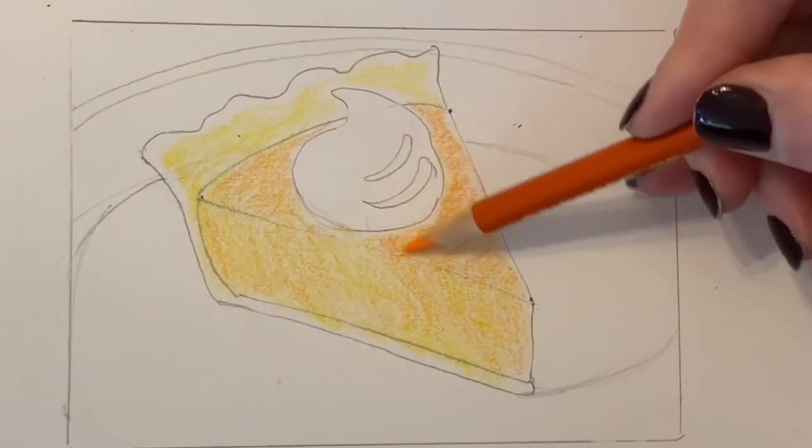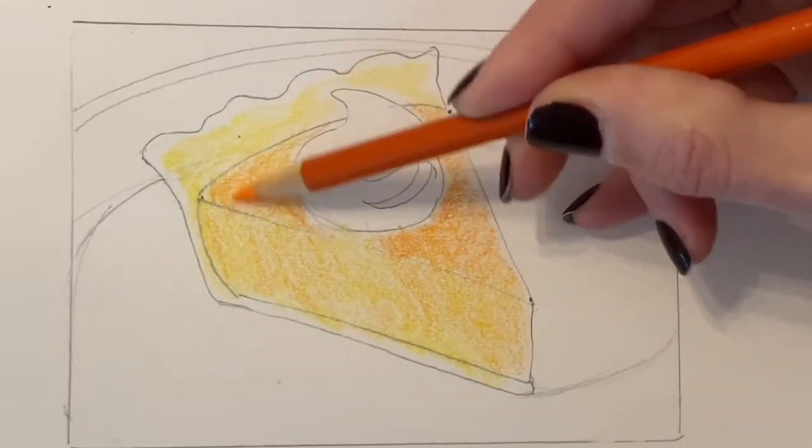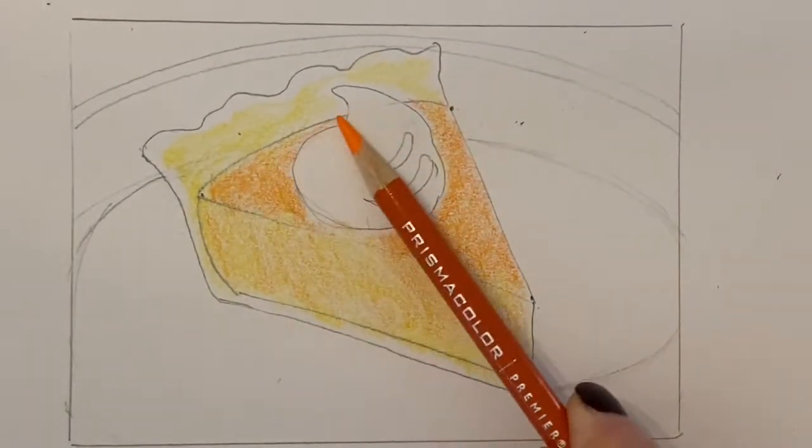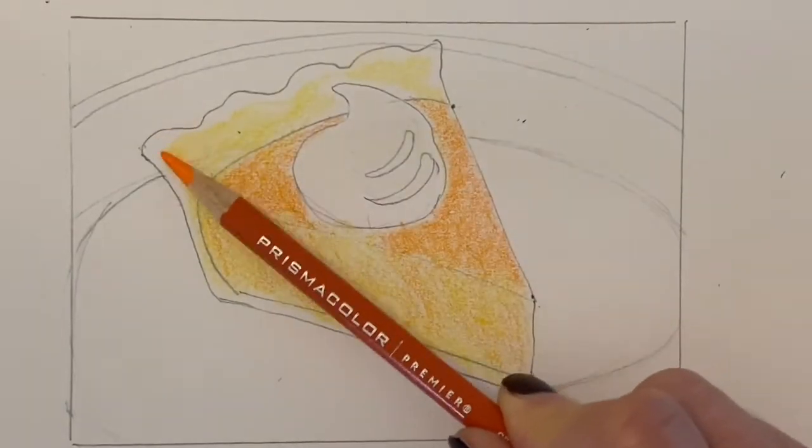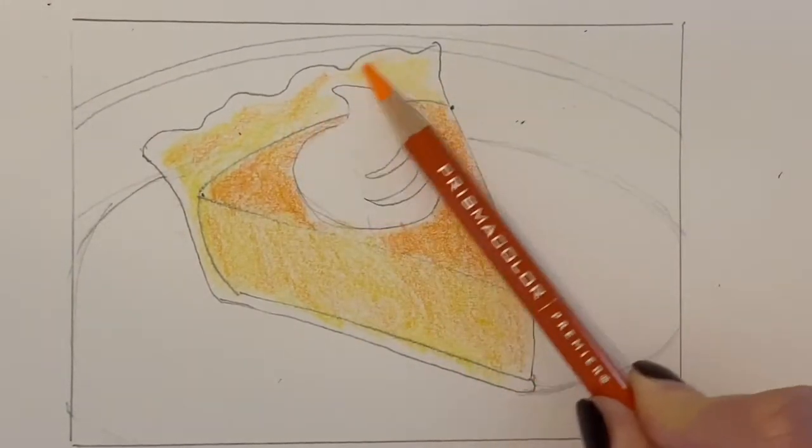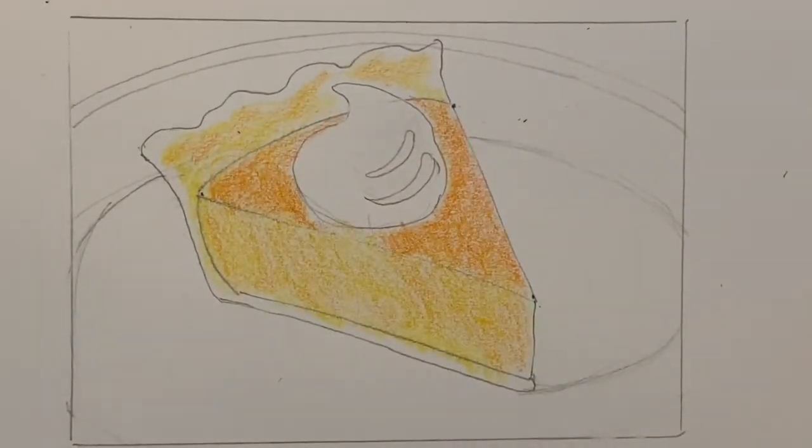I'm also going to use a little bit of orange in the crust. Notice how I'm leaving an area underneath the whipped cream that's a bit lighter. I'm going to continue to add less color in that one area.